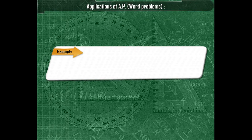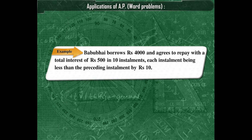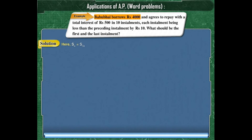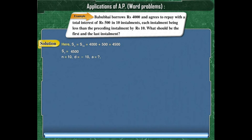Let us solve another question. Babu Bai borrows rupees 4,000 and agrees to repay with a total interest of rupees 500 in 10 installments, each installment being less than the preceding installment by rupees 10. What should be the first and last installment? The total amount to be paid is rupees 4,500. Therefore, S10 = 4,500, N = 10, and D = −10.